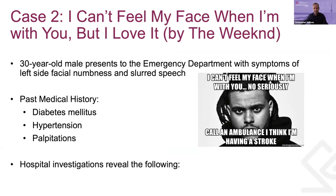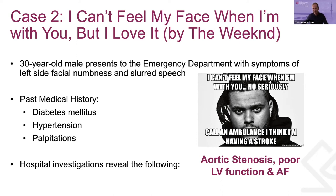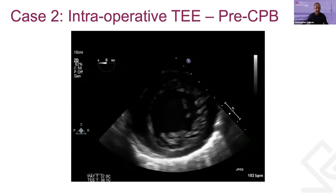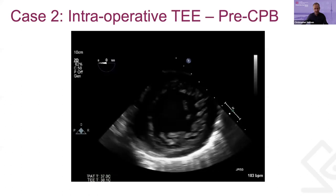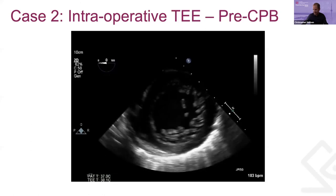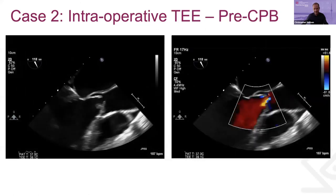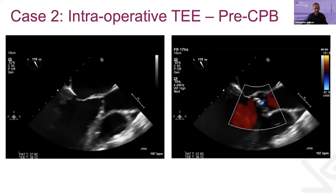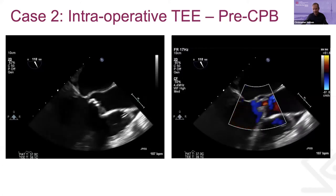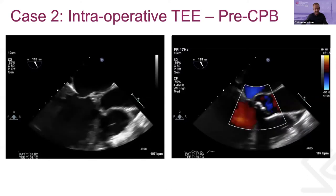Case two is a 30-year-old male presenting to the emergency department with left facial numbness and slurred speech. Past medical history includes diabetes, hypertension, and palpitations. He goes to hospital, gets milling tests, and is found to have aortic stenosis, poor LV function, and atrial fibrillation. His pre-op image shows poor LV function — graded as grade 3 LV — with LVH and significant dilatation. The long axis of the aortic valve looks very heavily calcified and appears stenotic with a high jet velocity, which is suspicious.